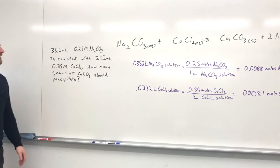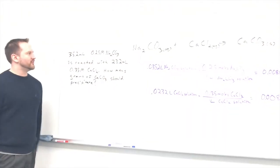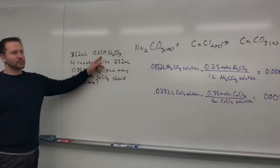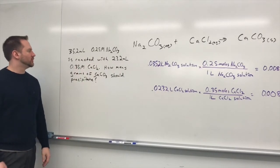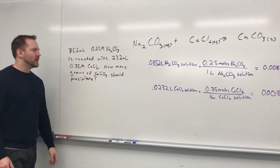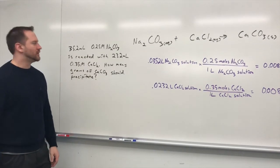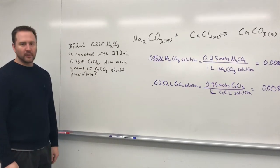So if we had 35.2 mils of 0.25 molar, this means moles per liter, sodium carbonate, reacted with 23.2 milliliters of 0.35 molar calcium chloride, and I ask you how many grams of calcium carbonate you're going to make.